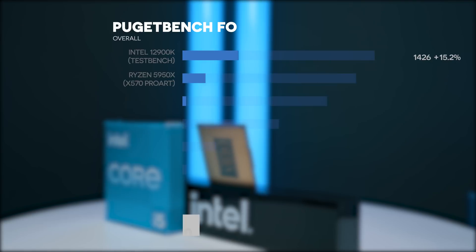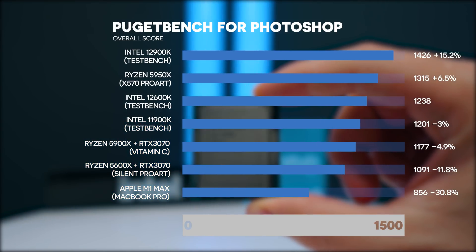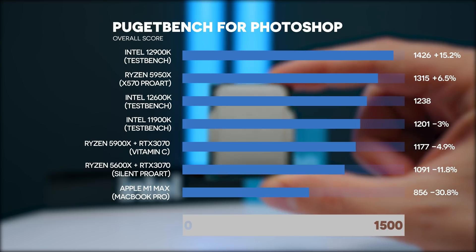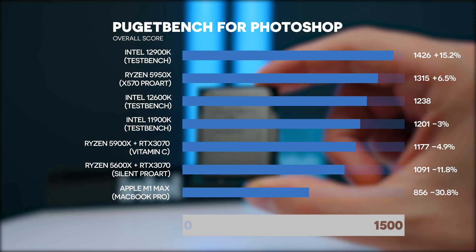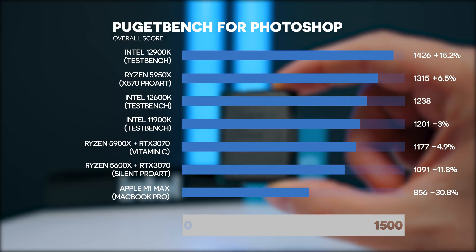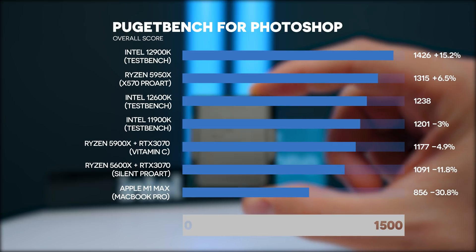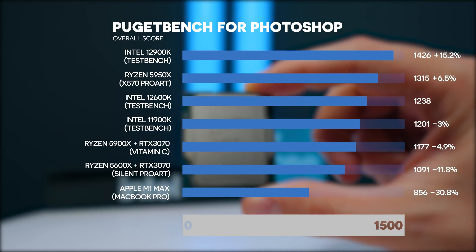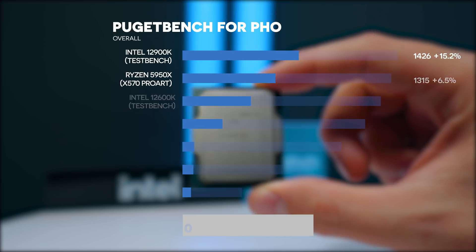Moving on to photo editing in Photoshop: the 12900K is 15.2% faster than the 12600K. The 5950X is 6.2% faster. The 11900K is 3% slower and the Ryzen 5900X 4.9% slower. Note that the 5900X and 5600X were tested with an RTX 3070 instead of 3090, but in Photoshop and Lightroom it makes essentially 0% difference. The Ryzen 5600X is 11.8% slower and the M1 Max is 30.8% slower than the 12600K.